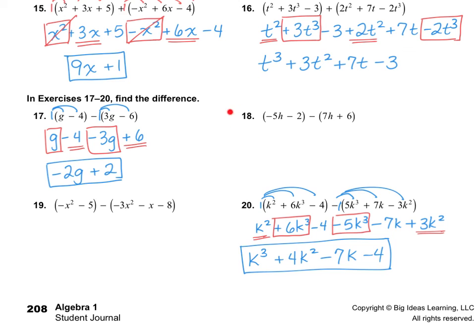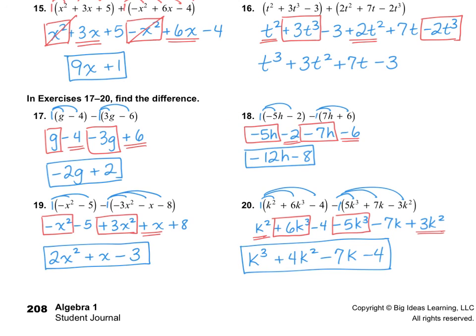I'd like you to do numbers 18 and 19 on your own. For number 18, I got negative 12h minus 8. And number 19 is 2x squared plus x minus 3. That's it — thanks for watching.